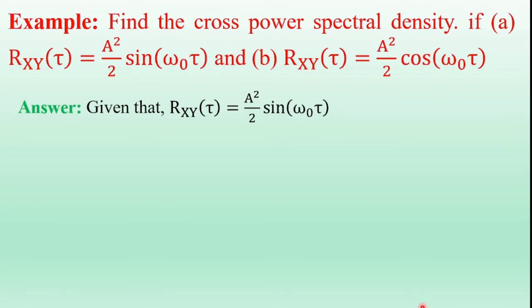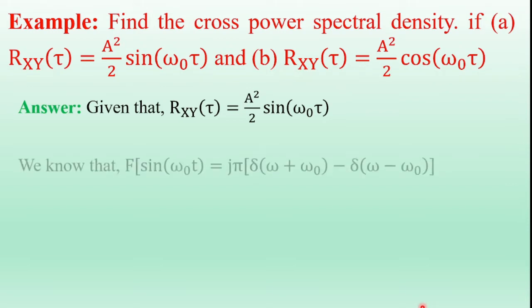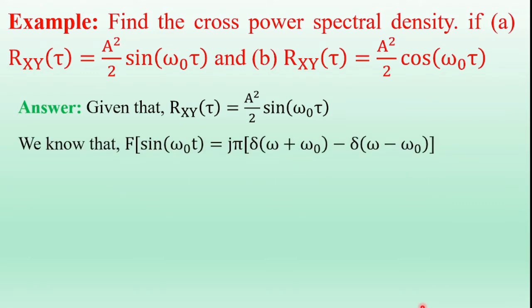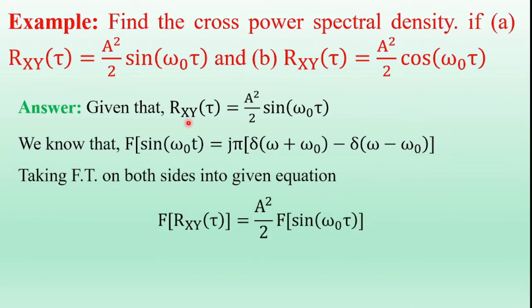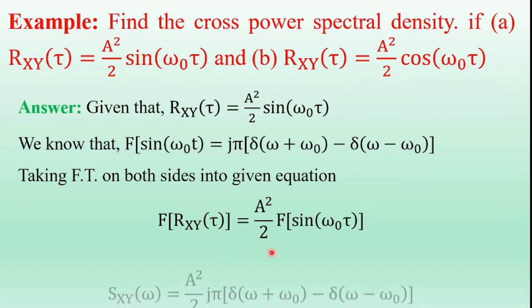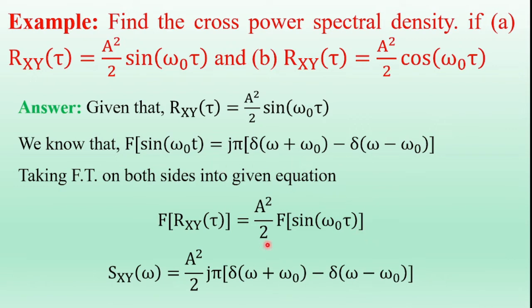Coming to the solution — first part: given that Rxy of tau is a-squared over 2 times sin of omega-naught tau. We know the Fourier transform of sin(omega-naught tau) is j*pi times [delta(omega + omega-naught) minus delta(omega minus omega-naught)]. Taking Fourier transform on both sides, the Fourier transform of Rxy of tau is Sxy of omega equals a-squared over 2 times j*pi [delta(omega + omega-naught) minus delta(omega minus omega-naught)]. This is the first part solution.